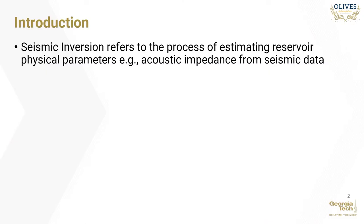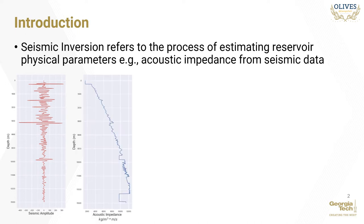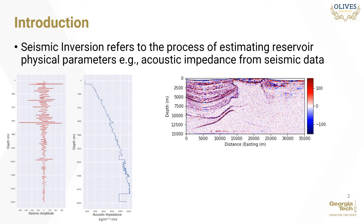Seismic inversion refers to the process of estimating reservoir physical parameters, for example acoustic impedance, from seismic data. Given a seismic trace as shown in the figure, we can invert it to obtain the corresponding physical property trace of the rocks. Inversion is usually performed on complete seismic sections or volumes. Given a seismic volume, one can perform inversion trace by trace to obtain the corresponding rock property volume.